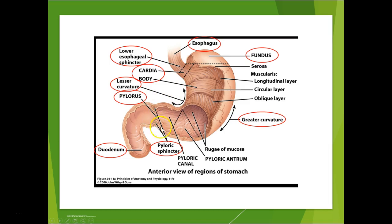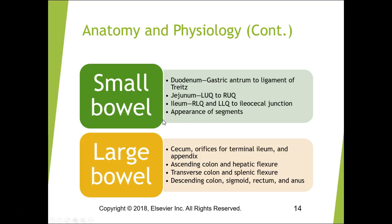For small bowel, we have the duodenum from the gastric antrum to the ligament of Treitz. The ligament of Treitz tells us if there's malrotation — the bowel loops back up before continuing into the small bowel. The jejunum is in the left and right upper quadrants; the ileum is in the lower quadrants going to the ileocecal junction. We have the cecum, the orifice of the terminal ileum — where we look for Crohn's — and the appendix, where we look for appendicitis.